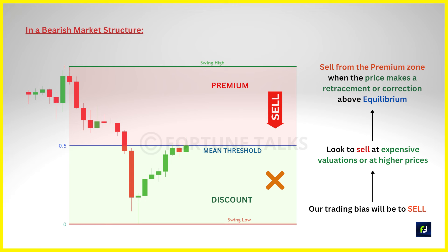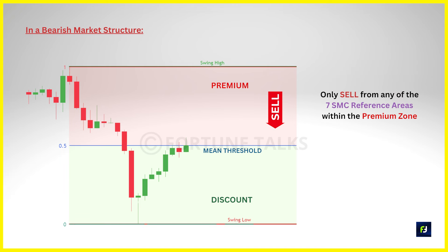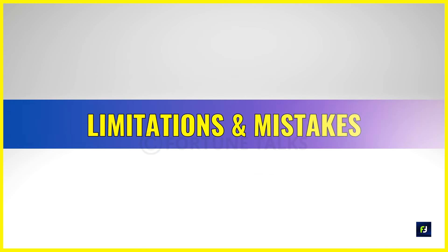Now you can't just sell at random prices within the premium zone — it doesn't work like that. You need to sell at any of the prices of interest or the SMC reference points existing inside the premium zone for the best possible results. This will provide a high probability setup for us to work with. Moving on, let us look at some issues with this concept and some of the common mistakes that traders make when using premium and discount zones.